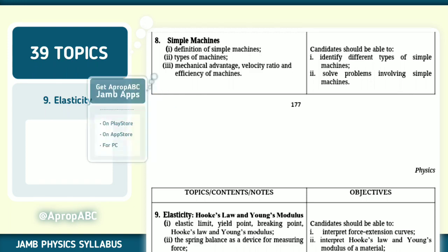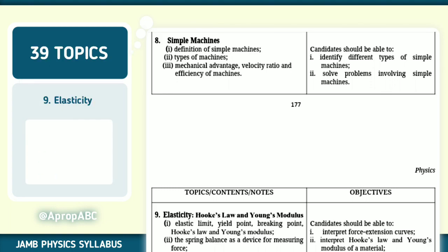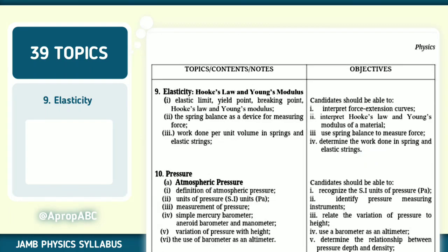Number nine out of 39, we have elasticity. Hooke's law and Young's modulus. The spring balance as a device for measuring force. Note that. The elastic limits - there's a particular curve. On that curve you will see elastic limit, yield point, break point. Hooke's law, Young's modulus. Note that particular graph. Candidates should be able to interpret force-extension curves, interpret Hooke's law and Young's modulus of a material, use spring balance to measure force, determine the work done in a spring and elastic string.